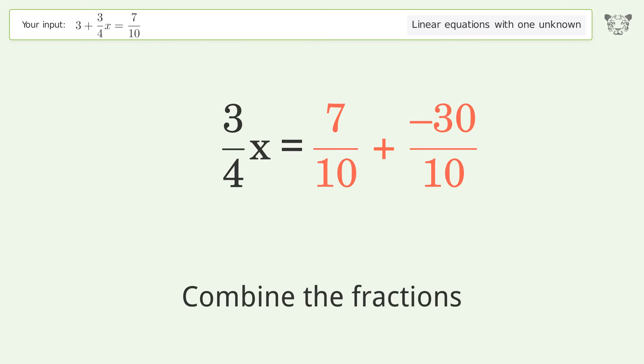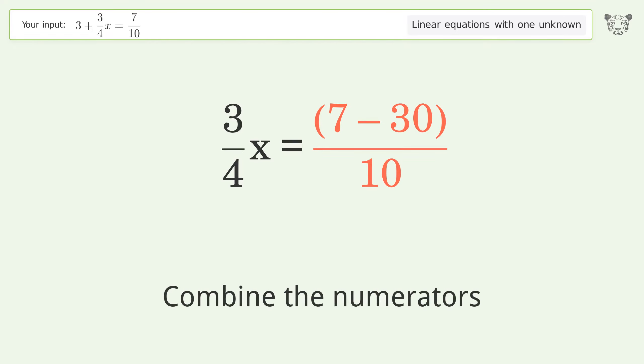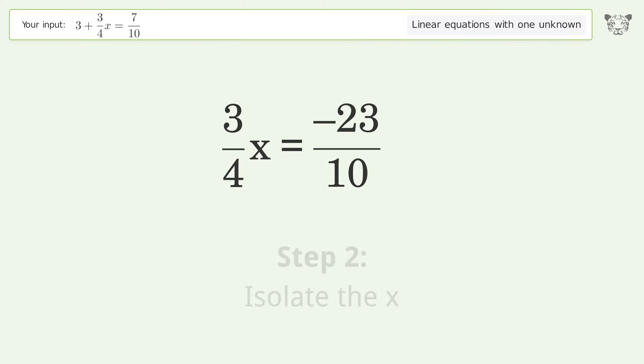Combine the fractions. Combine the numerators. Isolate the x. Multiply both sides by inverse fraction 4 over 3.